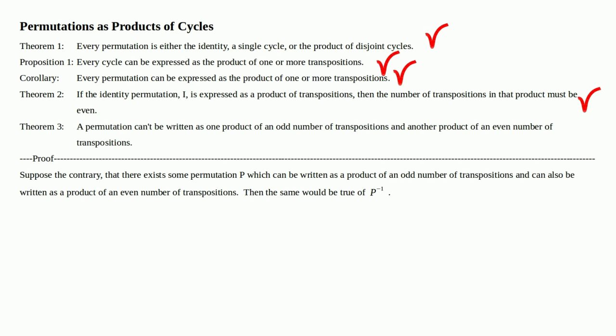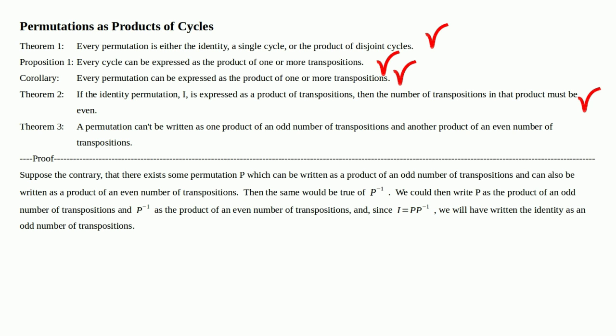Remember that a permutation is a bijective function, so it's one to one, it's onto, so that means there's an inverse permutation. So if it's true for p, it's true for p inverse, and we could then write p as the product of an odd number of transpositions and p inverse as the product of an even number of transpositions.